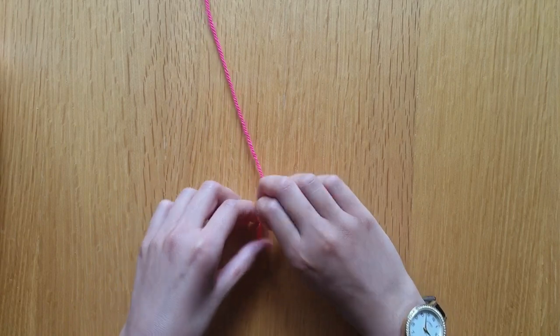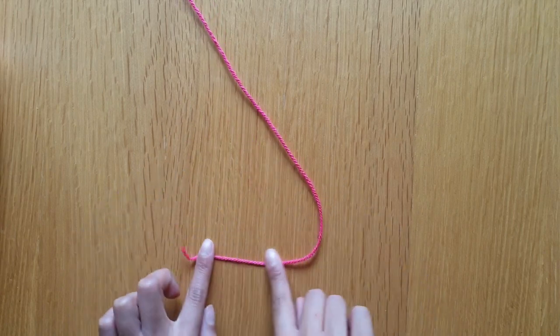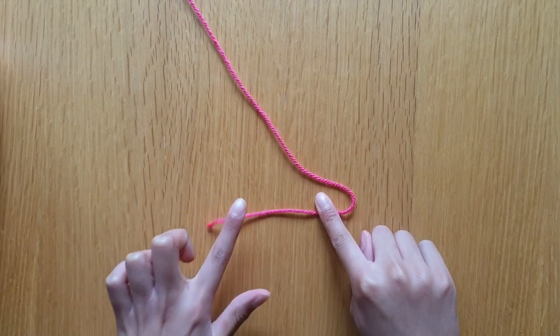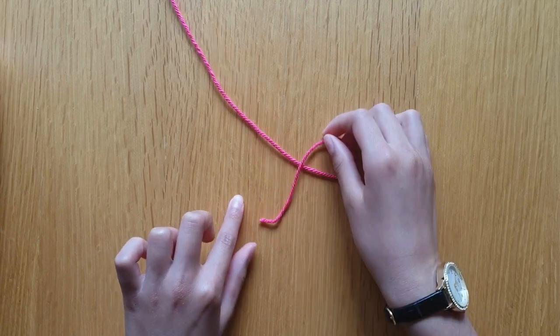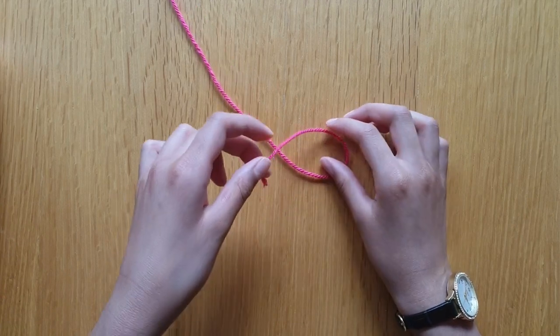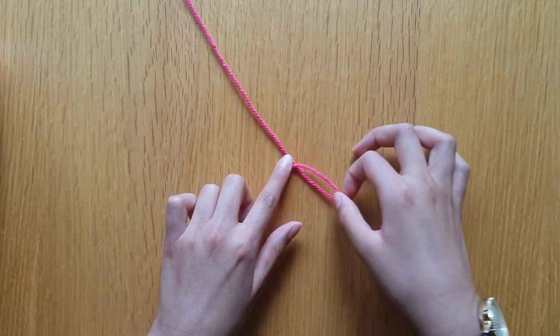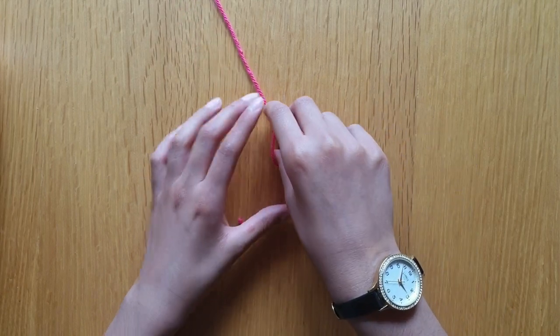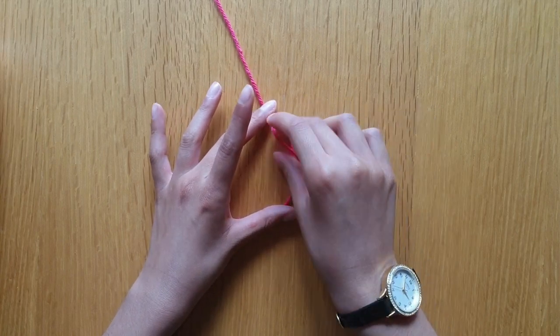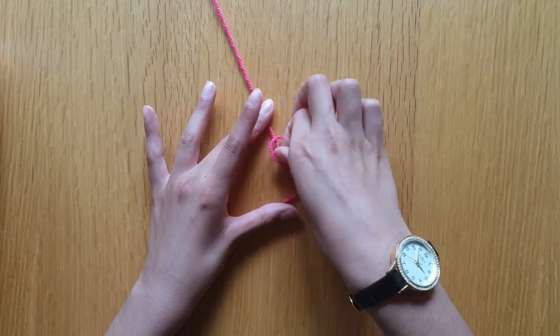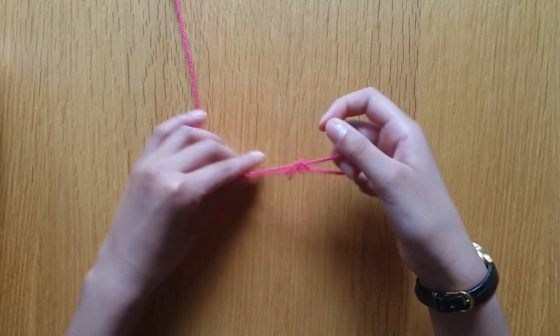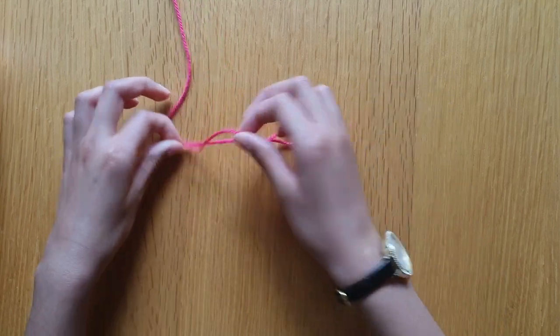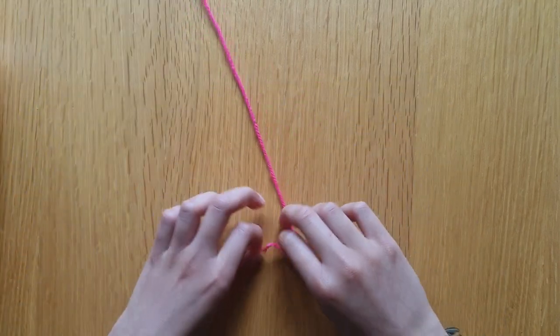Take the tail end and put it at the front. Hold it with your index finger. Cross it over like that, making sure the short end is always at the top. Put your finger over the cross, put the loop over the long end, holding both ends, pull it through.